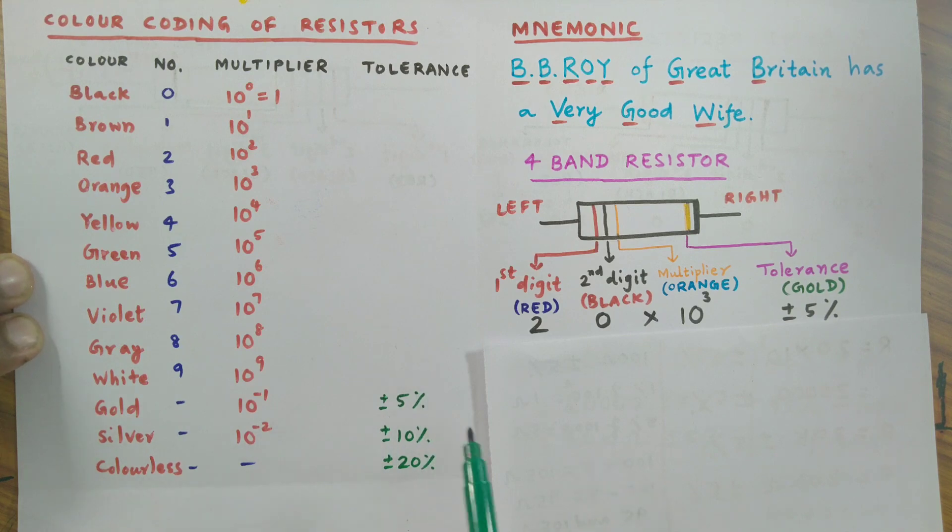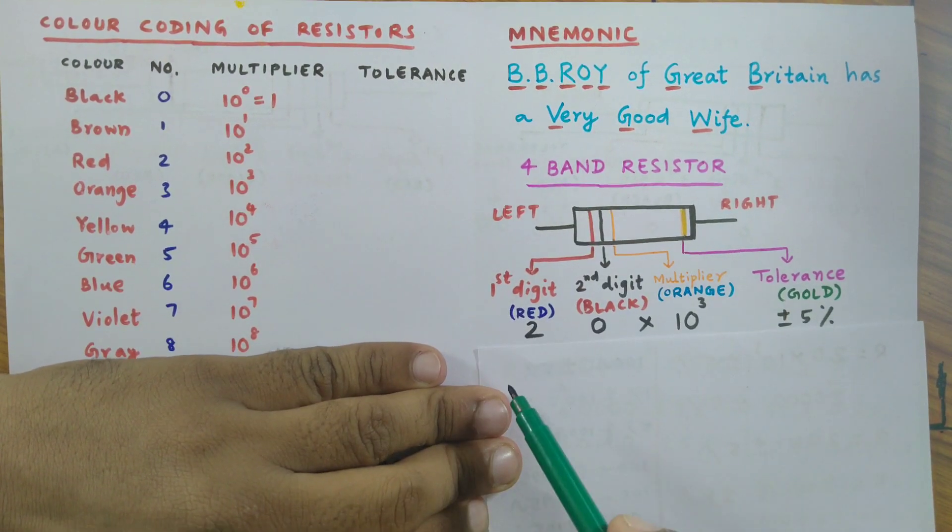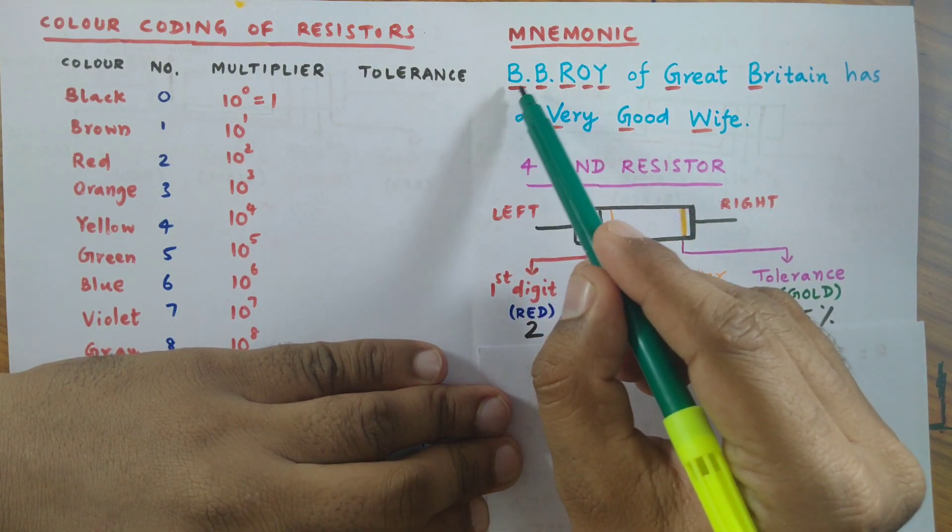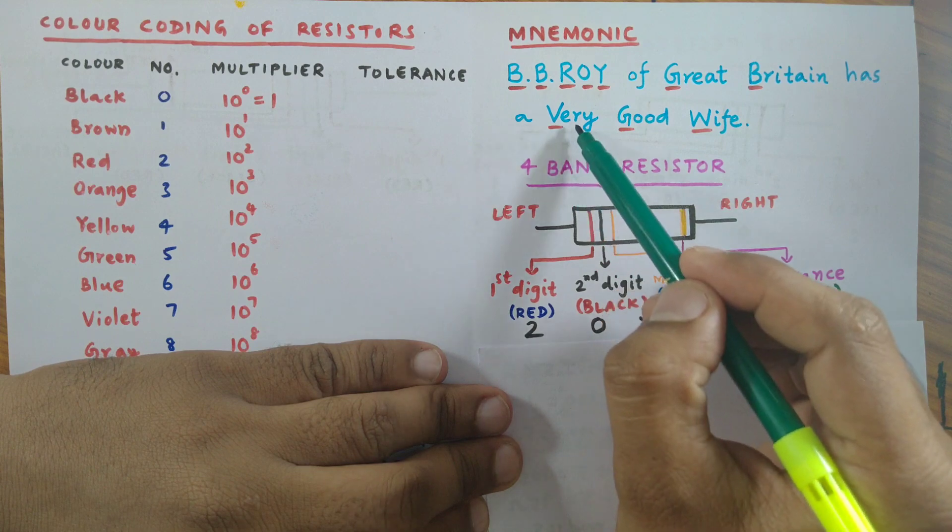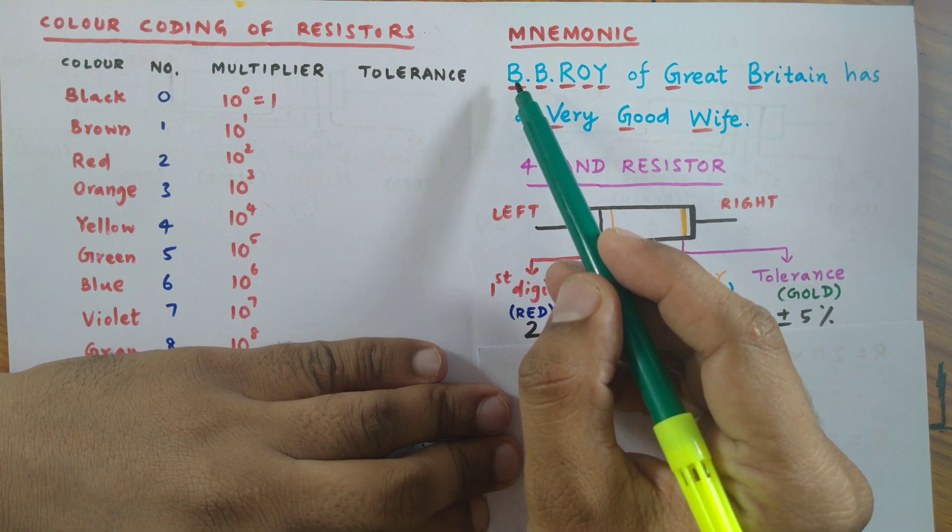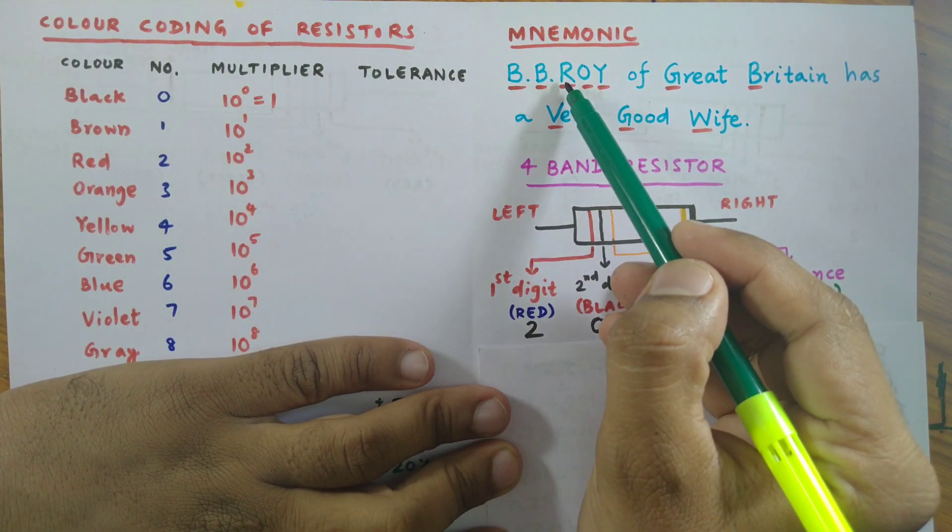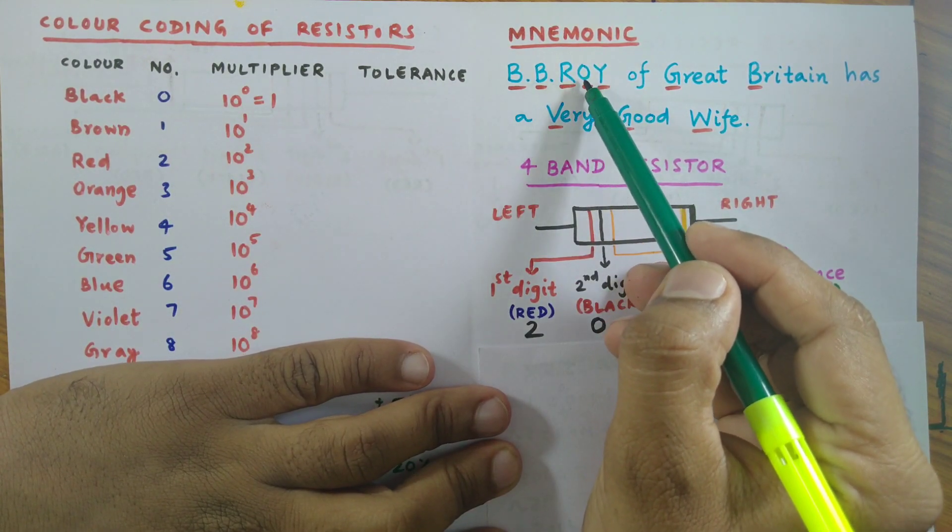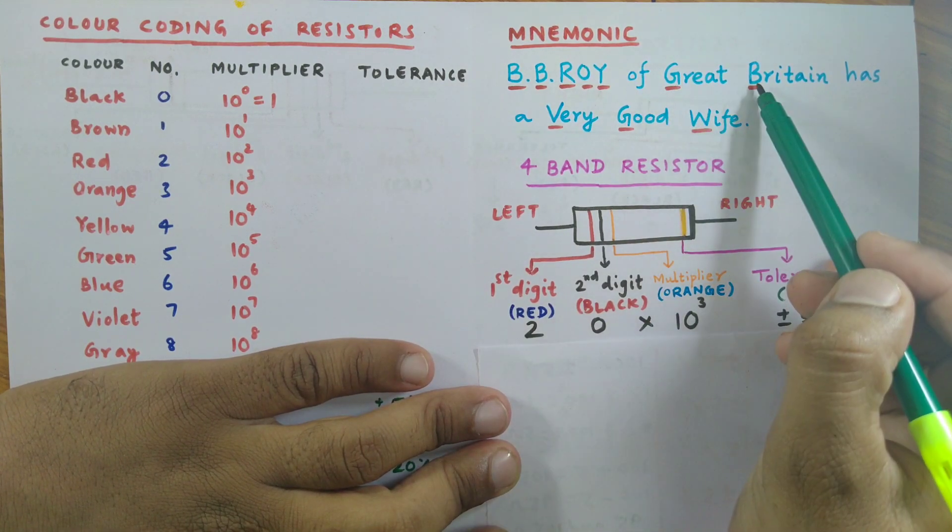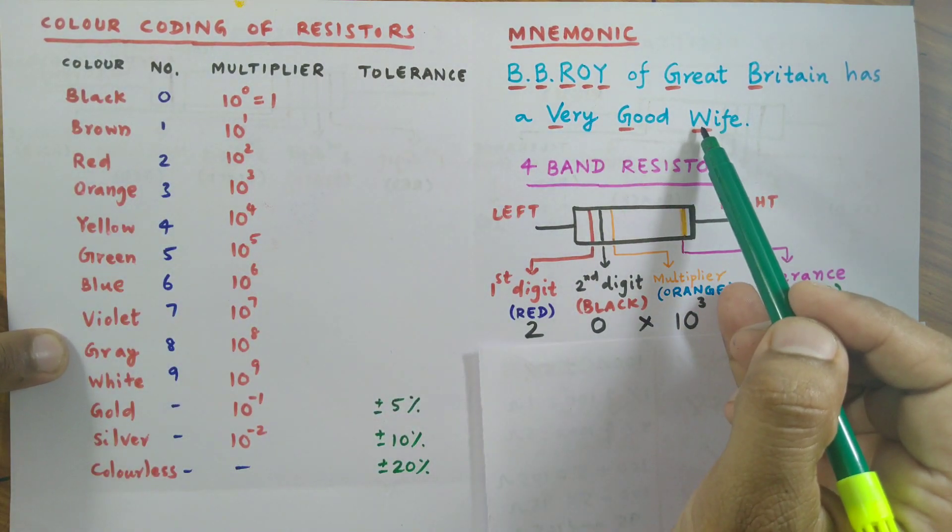How to remember these colors? There's a shortcut for that - there is a mnemonic. There's a sentence: BB ROY of Great Britain has a very good wife. Here, first letter B stands for black, second B stands for brown, R for red, O for orange, Y for yellow, G for green, B for blue, V for violet, this G stands for gray, and W stands for white.